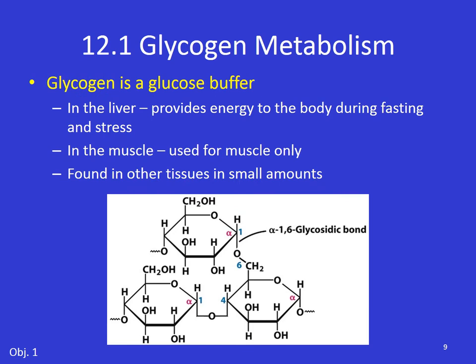Glycogen's main purpose is as a glucose buffer. In the liver, it provides energy to the body during times of fasting and stress when you don't have a ready supply of glucose. In the muscle, it does the same thing, but it doesn't provide energy to the whole body — it's just for that muscle tissue only. It's also found in other tissues in small amounts.